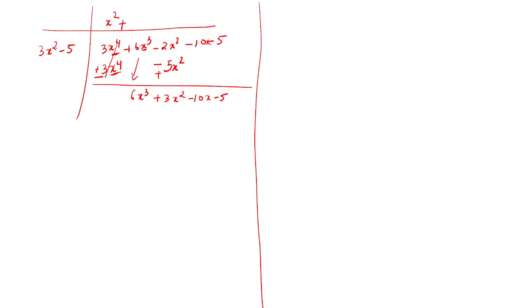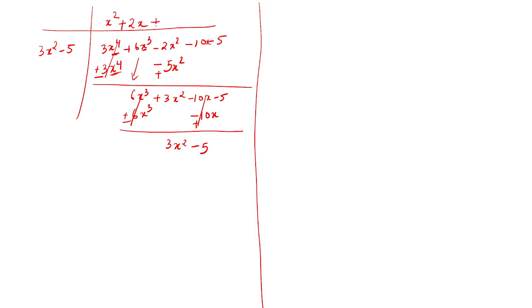What should you multiply 3x squared to get 6x cubed? Multiply by 2x. So 3 into 2 gives 6, x squared into x gives x cubed. And minus 5 into 2x gives minus 10x. The arrangement keeps like terms together. After cancellation, we are finally left with 3x squared minus 5.